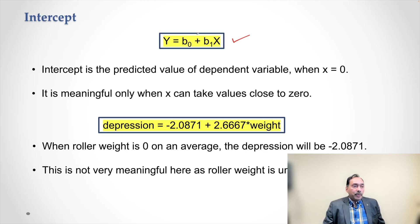Intercept, which is B0, is the predicted value of dependent variable when X is 0. That's how I showed you on the scatter plot. If you extend a straight line such that X equals 0, wherever it cuts the Y-axis, that's your intercept. That's where it intercepts the Y-axis. That's why it is called Y-intercept. And it is meaningful only when X can take values close to 0. So if your independent variable, in this case roller weight, if it is feasible to have values closer to 0, it will be meaningful.